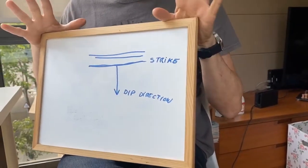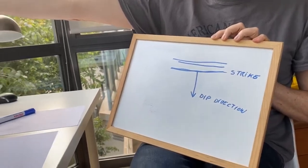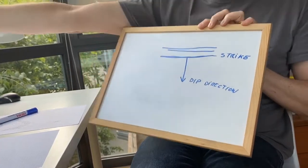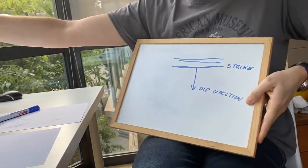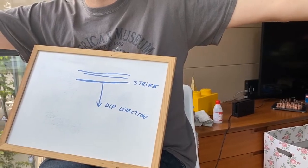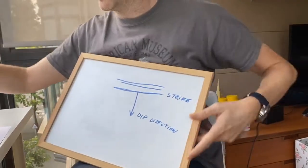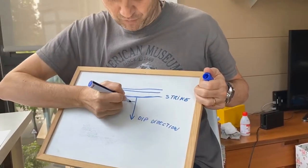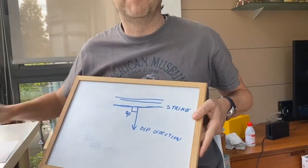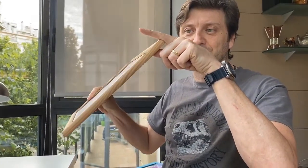These can be defined from a single unique reference point, which is the geographic north. If I have my north here on my right hand, this strike will make an angle of about 135 degrees, and my dip direction will make an angle of 45 degrees. The relationship between the strike and the dip direction is always 90 degrees — they have to be perpendicular. And then we have the dip, which is the degree of inclination of the plane.